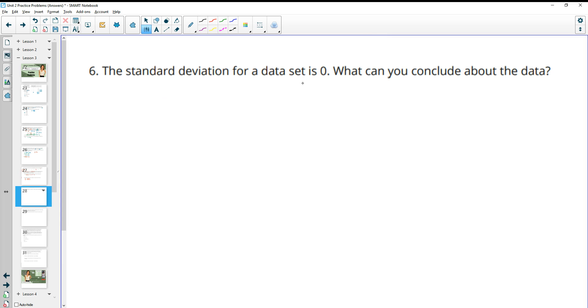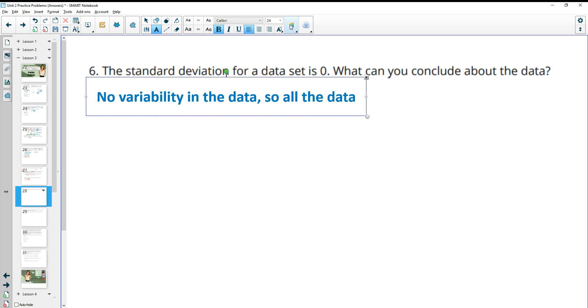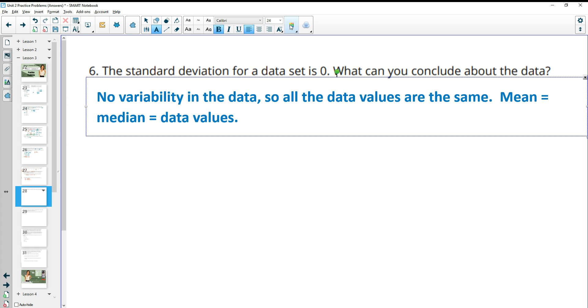The standard deviation for a set is zero. What can you conclude about this data? So there's many different things you can say about this. One is that if the standard deviation is zero, that means there's no variability. So there's no variability in the data. So all the data values would be the same. You could also say other things like the mean would equal the median would equal the data values. Since all of the values are the same, it's a uniform distribution. And I'm sure there's other things you can come up with.